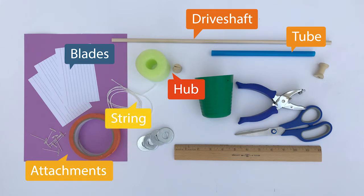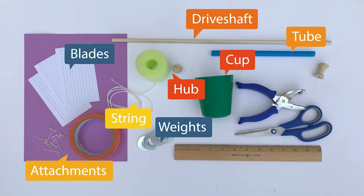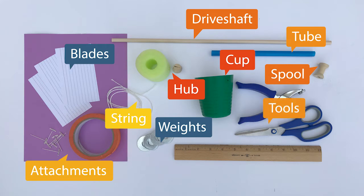You'll also need string, weights such as coins or washers, a cup to hold the weights, a spool or something to wrap the string around, scissors, a hole punch, a ruler, and any other tools you might want to use. You'll also need a fan to see how well your MacGyver windmill performs.